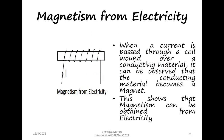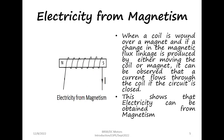So we can see that magnetism can be obtained from electricity and electricity can be obtained from magnetism. This forms the very basic principle of a generator. To have a generator, what we need is a magnet, a coil, and a mechanism which can rotate either the magnet or the coil. By having this, we'll be able to get electricity out of it.